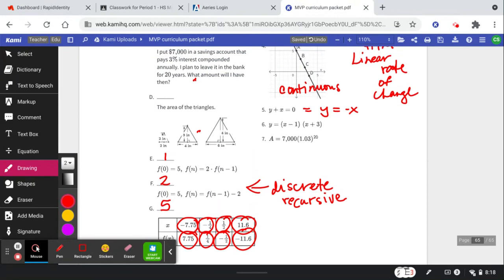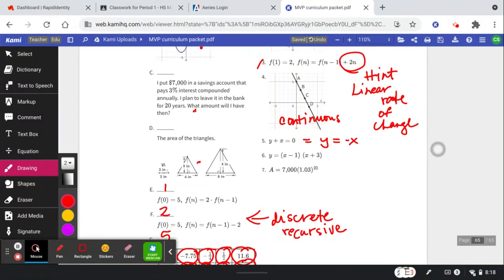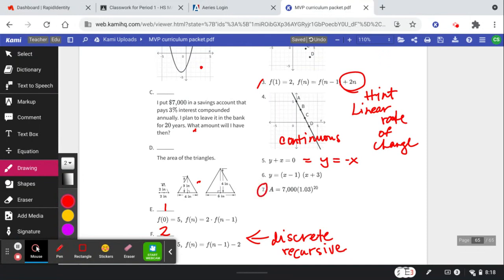Next is the area of triangles, x - 1 and x + 3. Then finally, the one with 7,000. This one has 7,000, so that goes with C: putting $7,000 in a savings account that pays 3% interest compounded annually. That's number 7. That leaves us number 6.